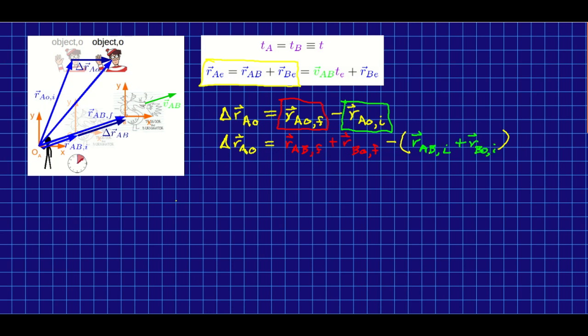Now look at what we've got. If I just collect the RABs, I'm going to have RABf minus RABi. Well, that's just delta RAB. And then collecting the BOs, I'm again going to have RBOf minus RBOi, and that is just delta RBO. And so there is our transformation relation for the displacements.